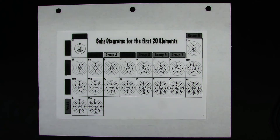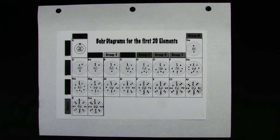Hello everyone, welcome back. My name is Mr. Koval, and in this video I'm going to show you how the periodic table is related to the different parts of the atom. Here I am using a Bohr diagram model of the periodic table in order to make this clear.